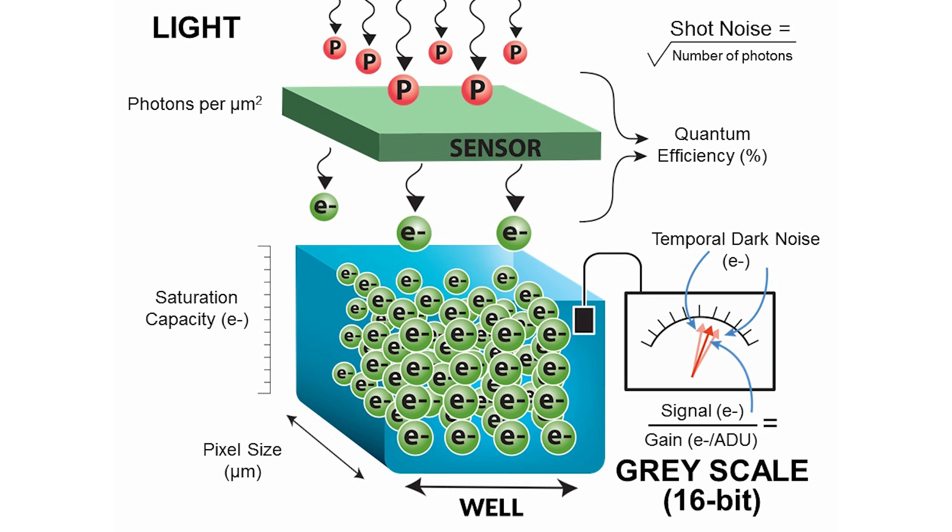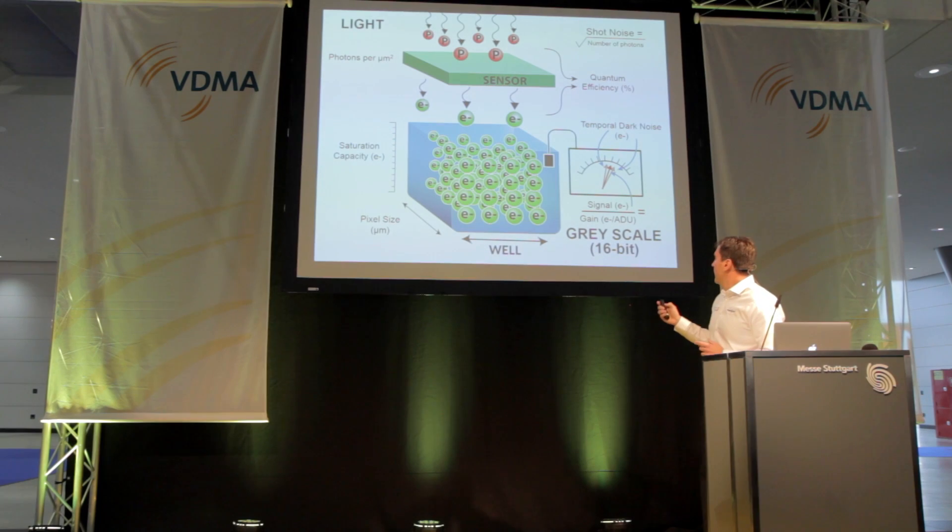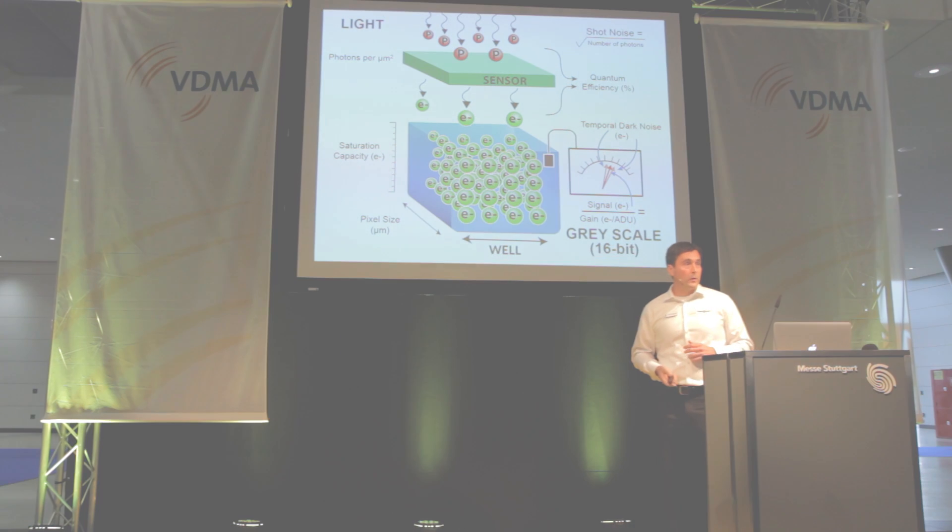We basically convert the number of electrons that the sensor has caught into grayscale, and in the case of the standard, everything is expressed in 16 bits.